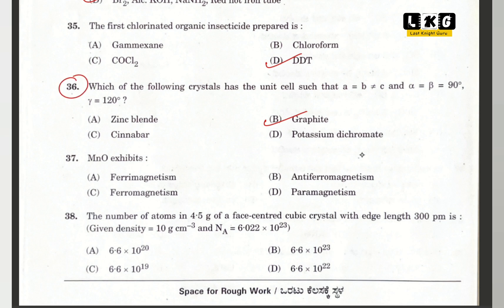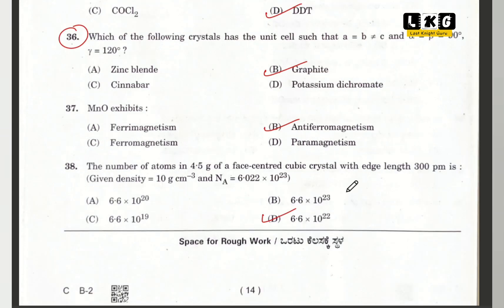Question number 37: MnO exhibits anti-ferromagnetism. Question number 38: the number of atoms in a face-centered cubic crystal with the given edge length — we will get 6.6 × 10²² atoms. This is from the solid state chapter.